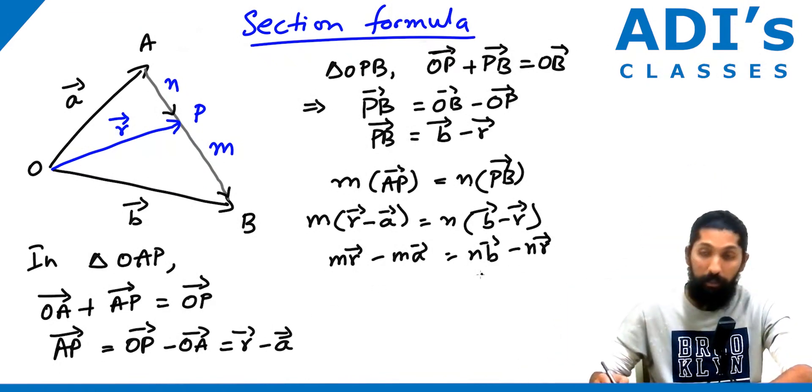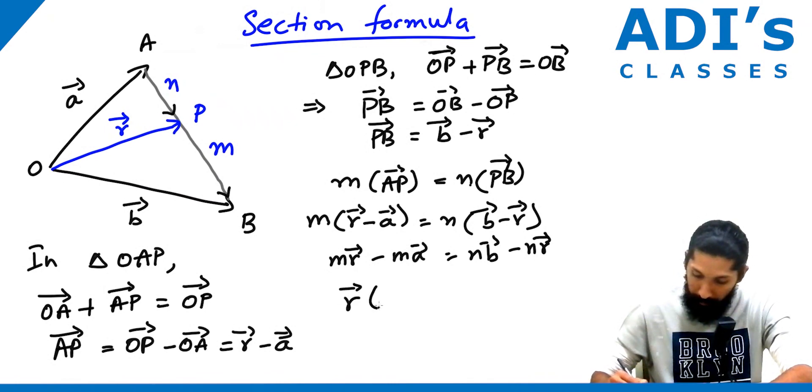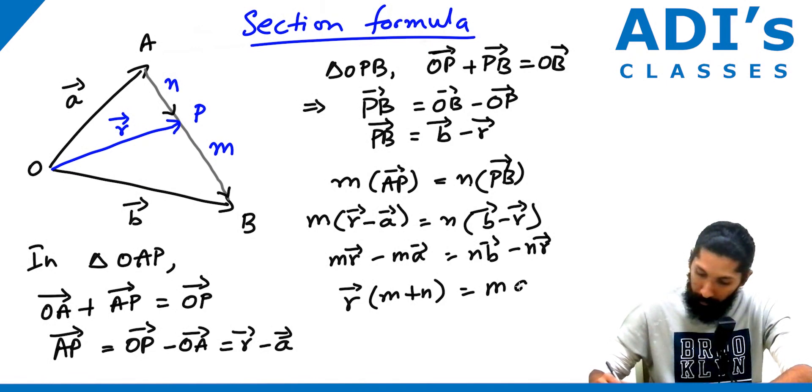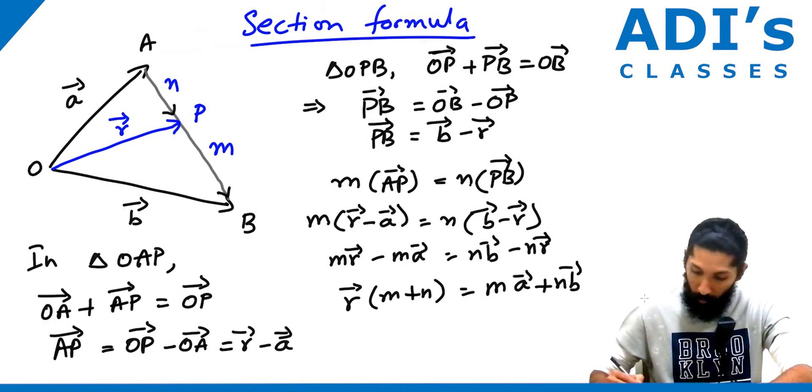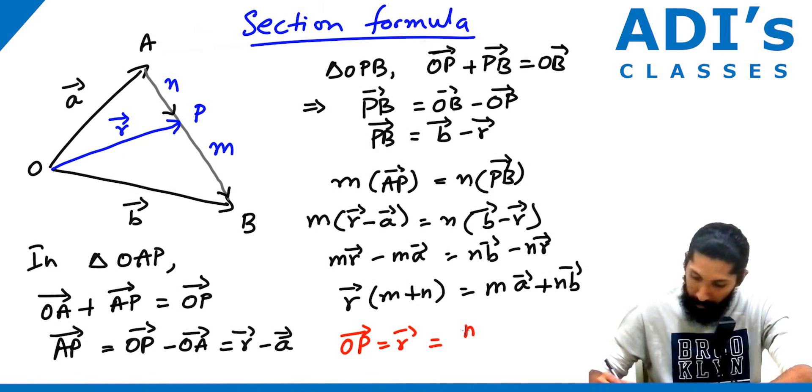Rearranging algebraically, vector R times (M plus N) equals M times A plus N times B. So vector R, which is OP, equals (M times A plus N times B) divided by (M plus N).